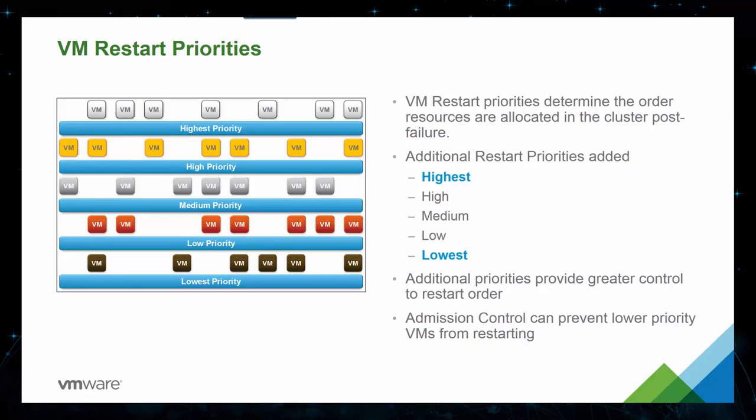To reduce the chance of this situation occurring, configure vSphere HA Admission Control to reserve more resources for failures. Admission Control allows you to control the amount of cluster capacity that is reserved, which is unavailable to meet the reservation and memory overhead of other virtual machines if there's a failure.